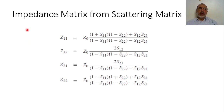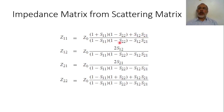For example, if we have the scattering matrix and it is required to obtain the impedance matrix, we can obtain Z11 as Z0 — where Z0 is the characteristic impedance of the system — multiplied by (1 + S11)(1 − S22) + S12·S21, all over the denominator (1 − S11)(1 − S22) − S12·S21. It should be noted that in this conversion, the denominator is the same for all cases.